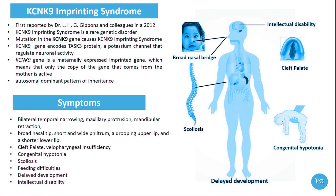The prevalence may be affected by the availability and use of genetic testing. Improved access to genetic testing and diagnostic resources may lead to more cases being identified. Increased awareness among healthcare providers and researchers can lead to better identification and reporting of cases, which may impact the understanding of prevalence.